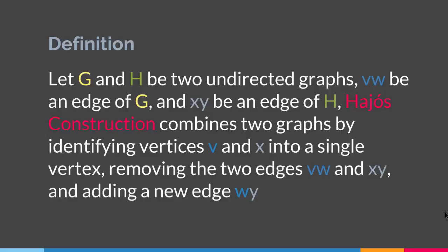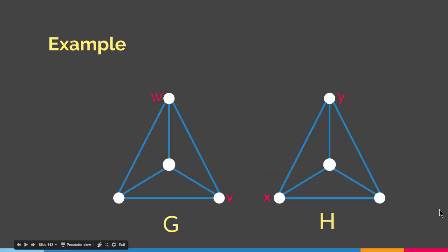They may sound a little bit complicated, so let me give you an example. Let's say we have these two graphs G and H. As you can see, we have four vertices — W and V in G, and Y and X in H. Basically what we do in order to create a new graph by Hajos Construction, we will delete the edges VW and XY.